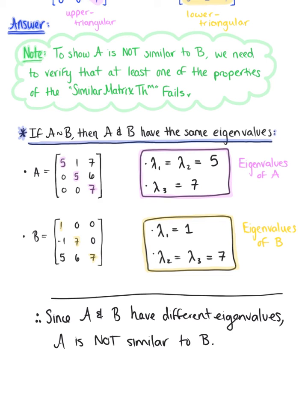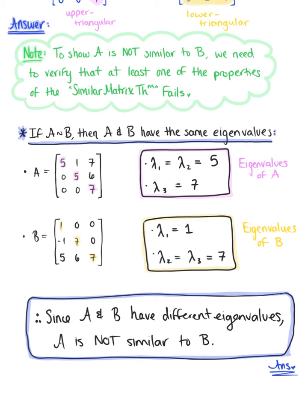And so this is our beautiful final answer. And again, I want you to keep in mind that this is not necessarily an exclusive solution. Remember that we only need to show at least one of these properties fails, but there are six other properties that we could have used to check here.